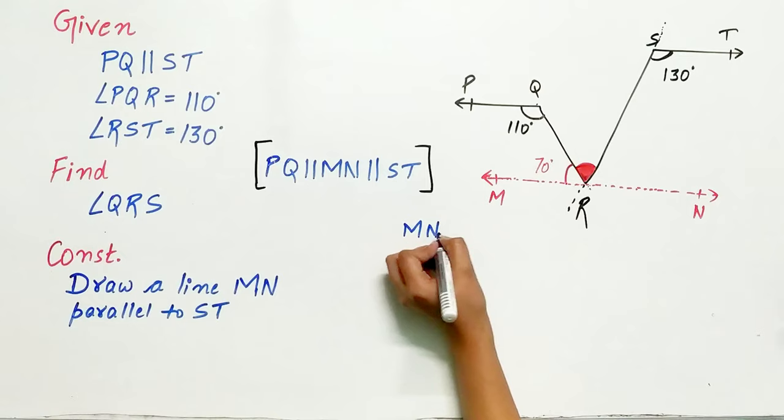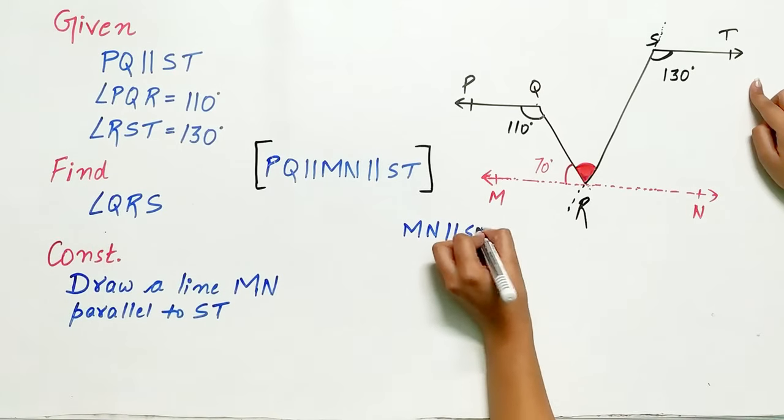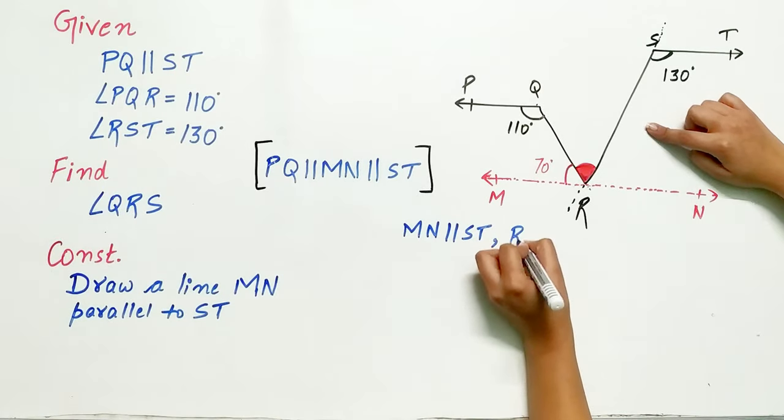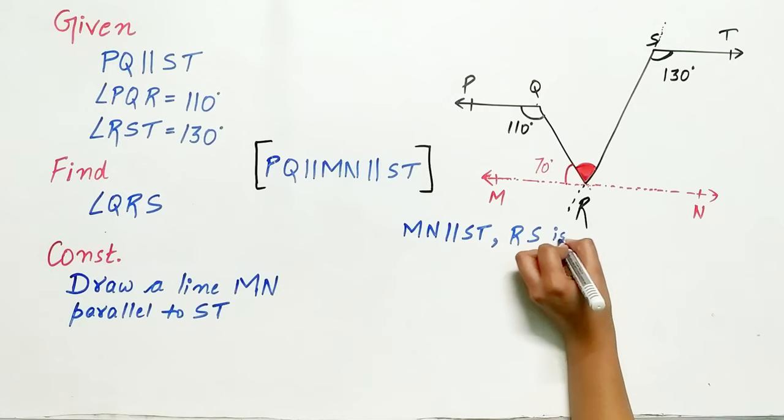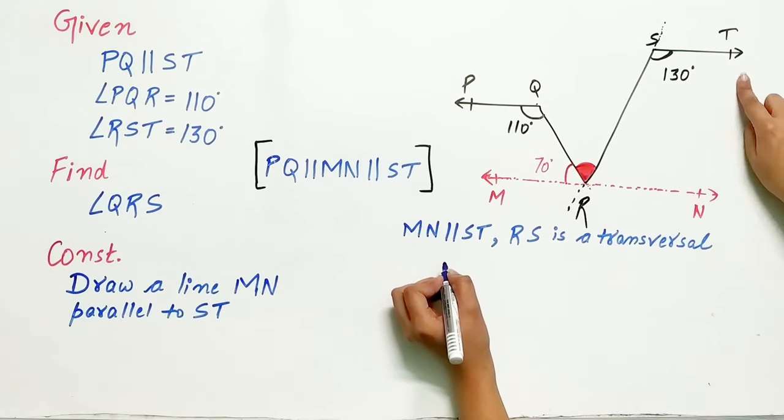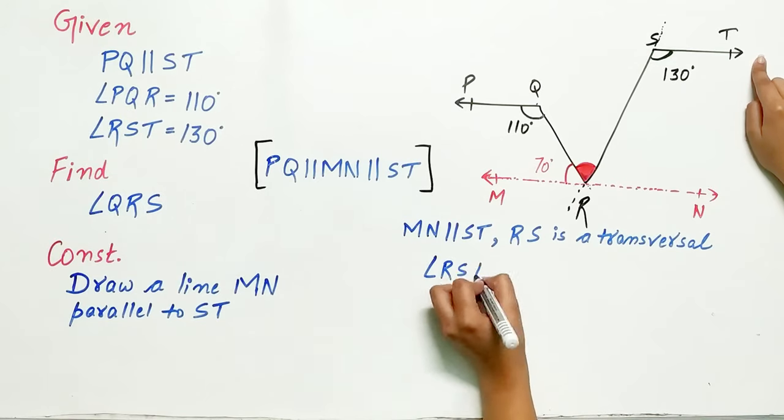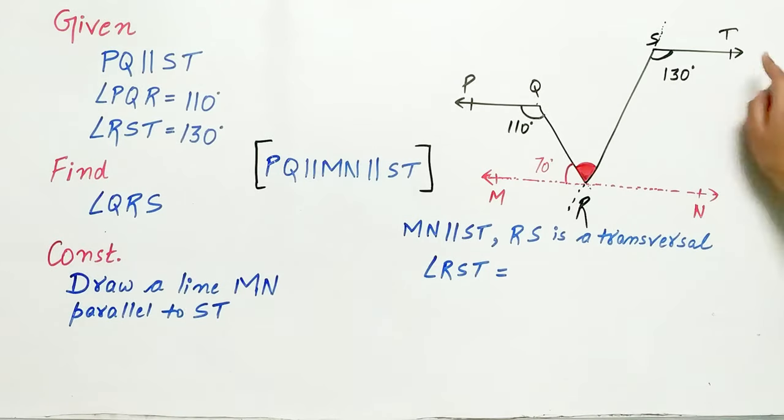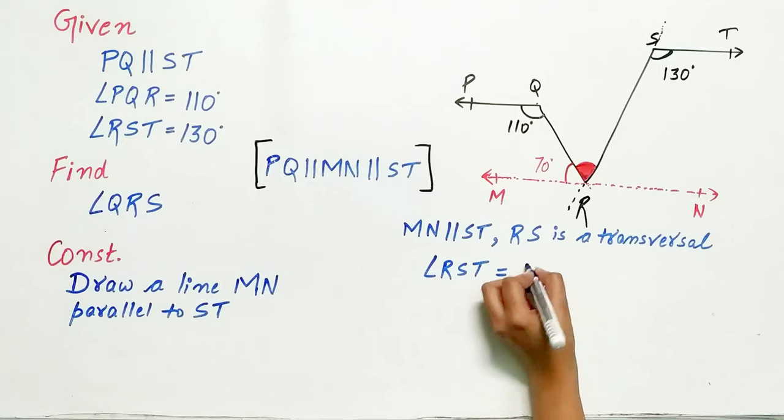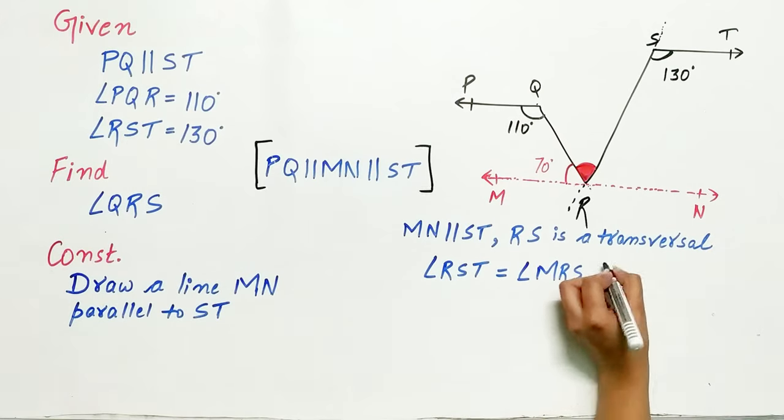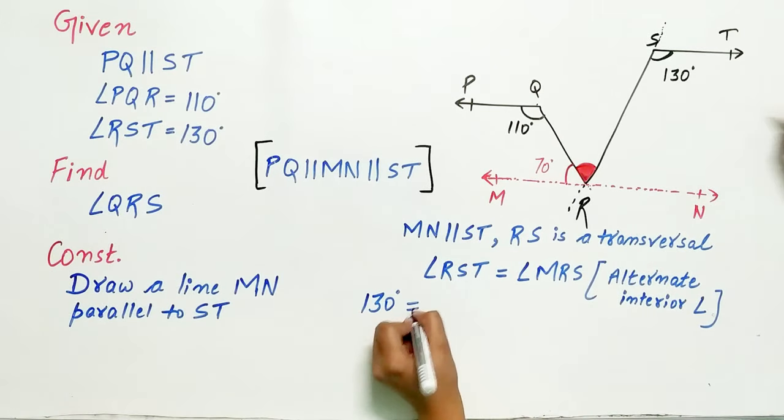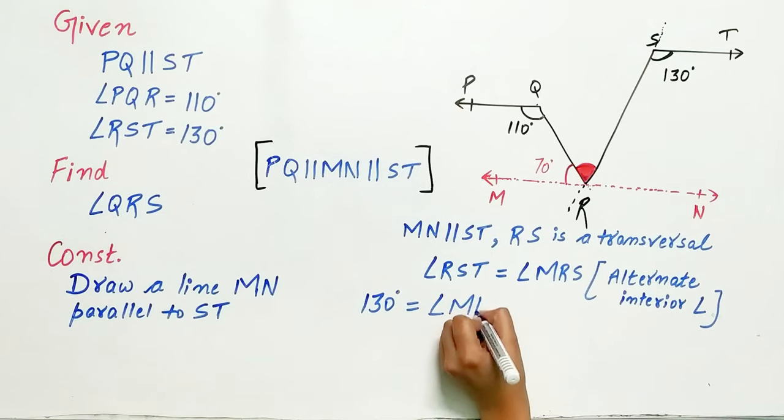MN is parallel to ST, RS is a transversal. Hence angle RST equals angle MRS. Why? MRS is equal to 130 degrees.